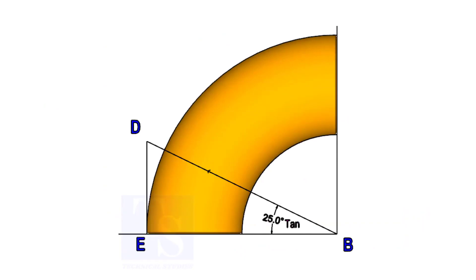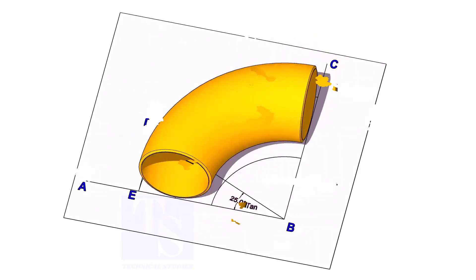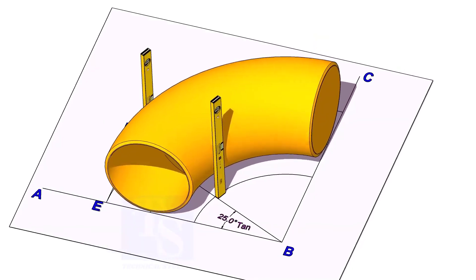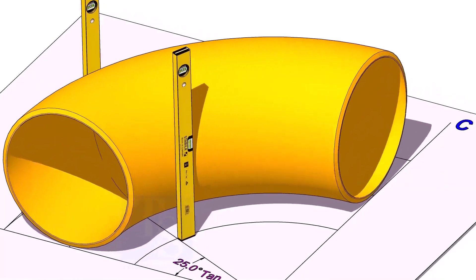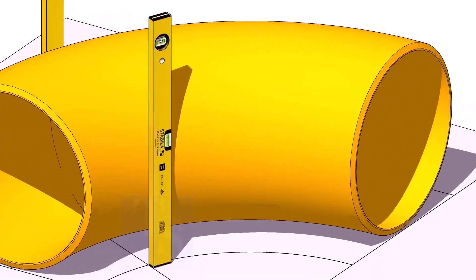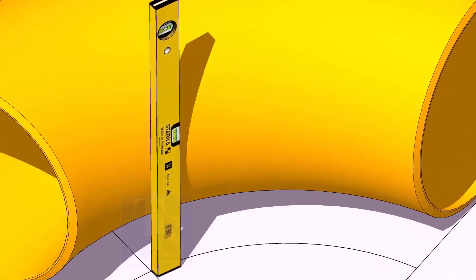Now, put the elbow exactly on the layout as shown. Hold two large level bottles at the edge of the elbow on both sides vertically, and strike a mark where the level bottle edge touches the elbow.